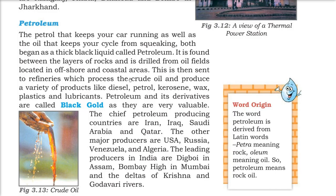The chief petroleum producing countries are Iran, Iraq, Saudi Arabia, and Qatar. Other producers include USA, Russia, Venezuela, and Algeria. In India, the leading producing areas are Digboi in Assam, Bombay High in Mumbai, and the deltas of the Krishna and Godavari rivers.